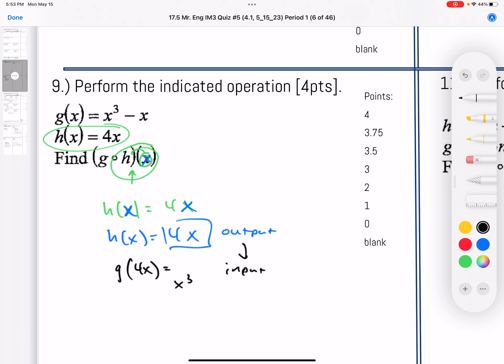So g of x is x to the third minus x. So this is going here for each of these yellow values. So now it's going to read 4x to the third power minus 4x.